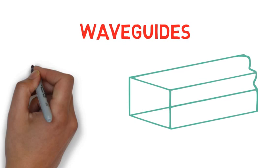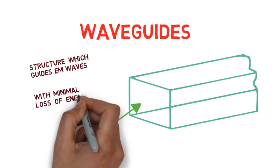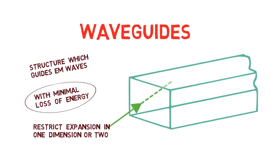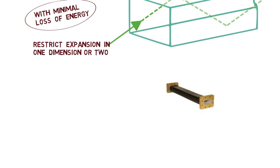Waveguides are structures that guide electromagnetic waves with minimal loss of energy by restricting expansion of the wave to one or two dimensions. Commonly used waveguides are rectangular cross sectional waveguide and circular cross sectional waveguide. These waveguides are used in most applications.